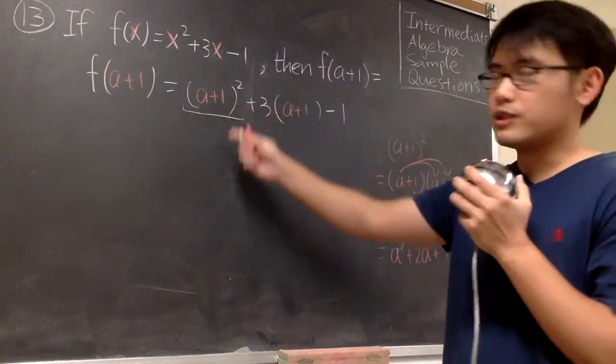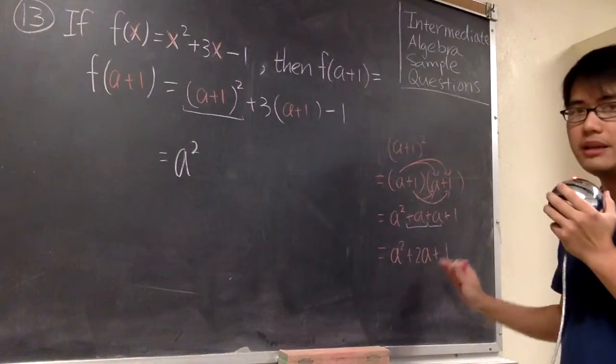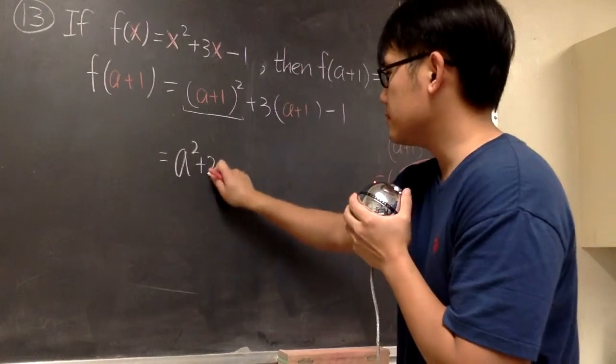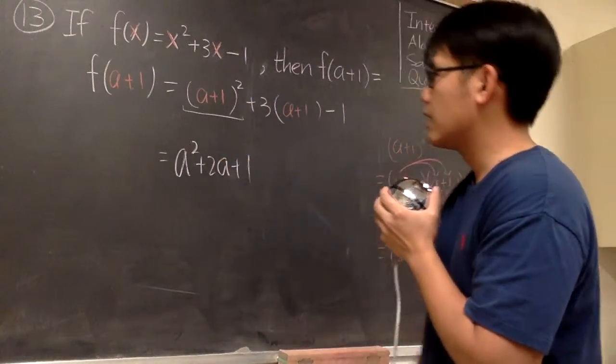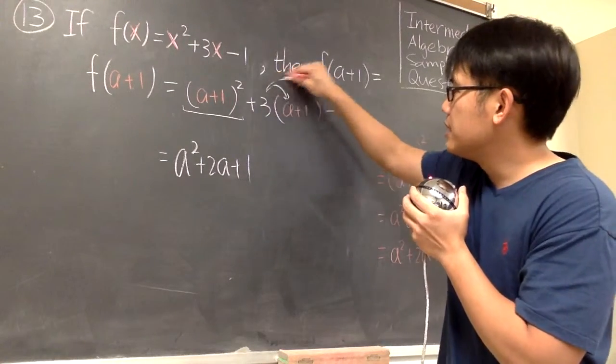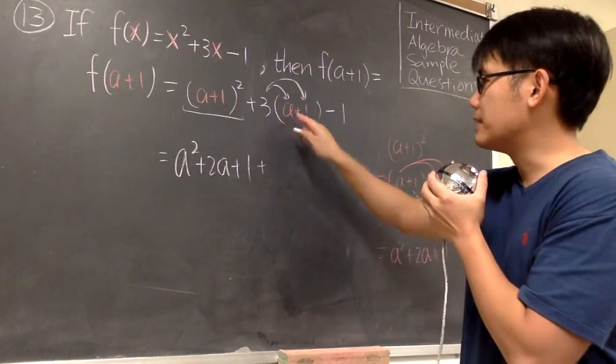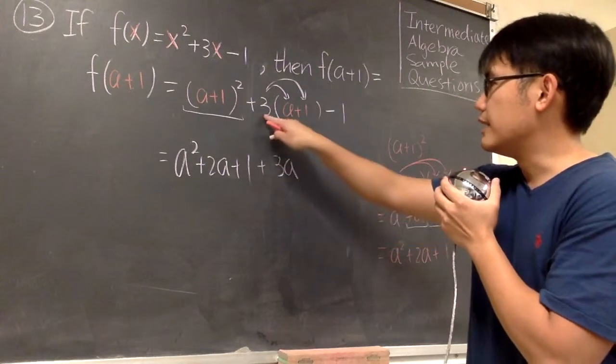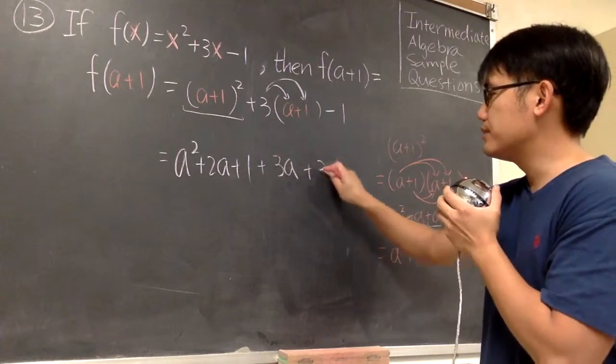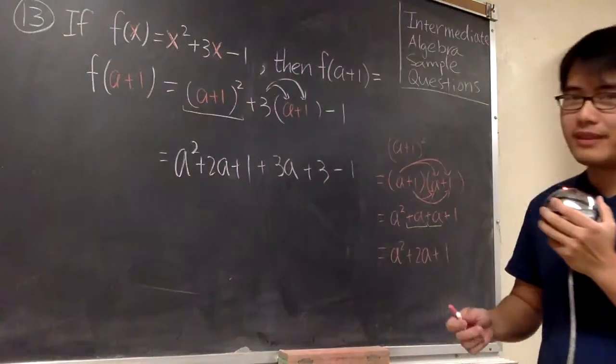That's the result for the first part, right here: a² + 2a + 1. For the second part, we take the 3 and distribute it into the parentheses. So we have plus 3 times a, that's 3a, and 3 times 1, that's plus 3. And then we have the minus 1, right here.